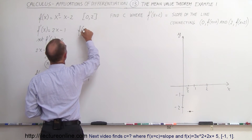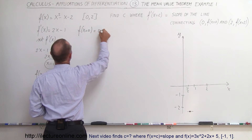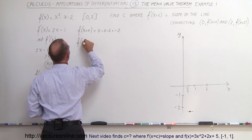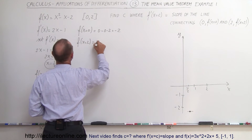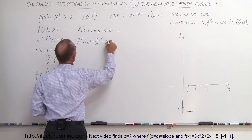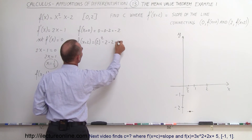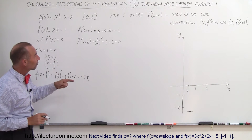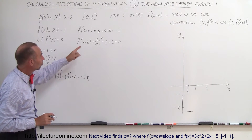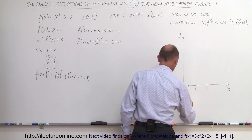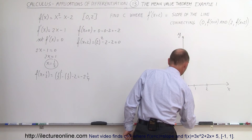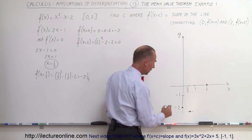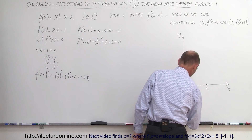f(0) equals 0 minus 0 minus 2, which is minus 2. And f(2) equals 2 squared minus 2 minus 2, that's 4 minus 4, which is 0. So the two endpoints of the interval are (0, -2) and (2, 0). That's this point right here and this point right here. Now we have three points and we can see the shape of the parabola. The interval will look like this.